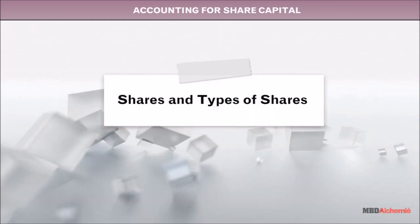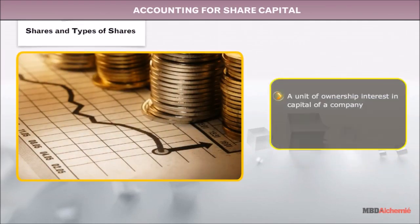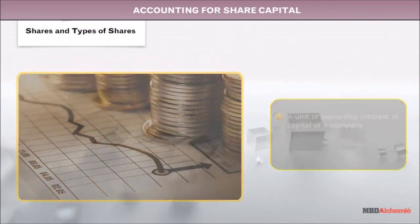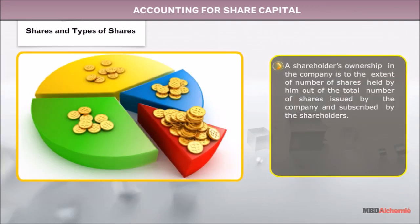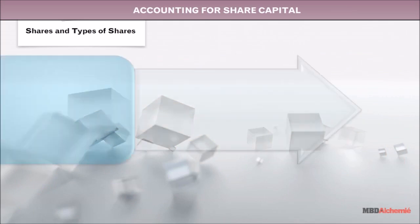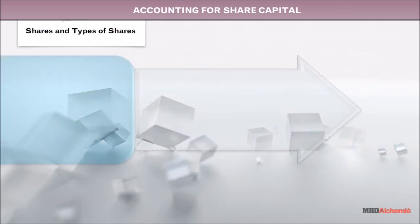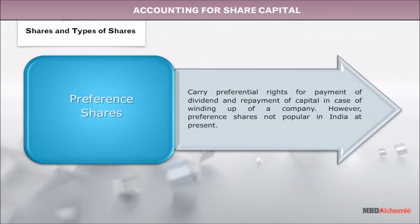Shares and Types of Shares: A share is a unit of ownership interest in the capital of a company. A shareholder's ownership in the company is to the extent of the number of shares held by him out of the total number of shares issued by the company and subscribed by the shareholders. There are two types of shares: Equity Shares and Preference Shares.